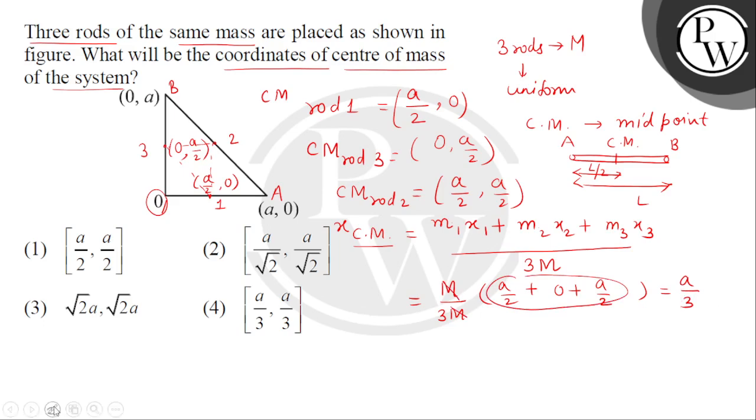Ab find karenge y coordinate. Toh y coordinate for center of mass will be M1 y1 plus M2 y2 plus M3 y3 and divided by thrice of M.